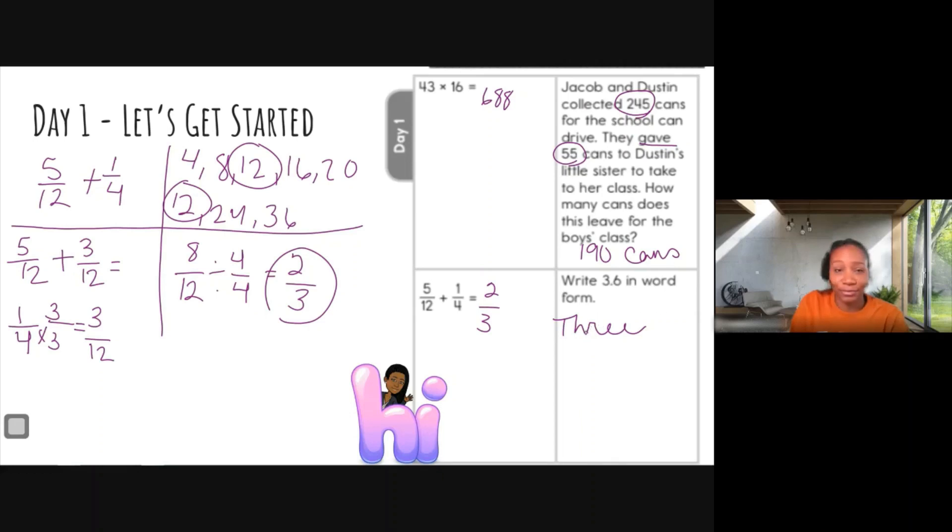Three and six tenths. Okay, and that is with the 'th' on the end. All right, why did I use 'and'? Because that 'and' tells me that there is a decimal there. All right, and that is it for today. I will see you tomorrow.